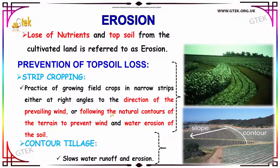Now we are going to discuss about erosion. Erosion is nothing but the loss of nutrients and topsoil from cultivated land. Erosion prevention is used to prevent topsoil losses. How do we prevent topsoil losses? Through strip cropping and contour tillage. Strip cropping is the practice of growing field crops in narrow strips.